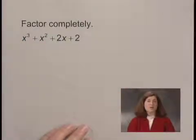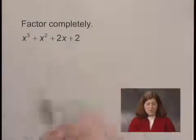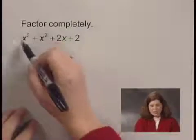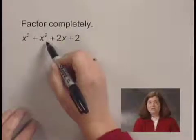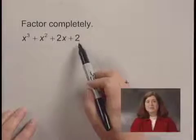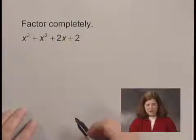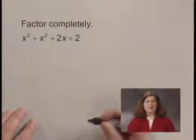Then we look at the number of terms. Here there are four terms. If there are four terms, we need to try factoring by grouping. I'm going to group the first two terms and factor out a common factor, and the third and fourth term and factor out a common factor, and see when I'm done if I have a common binomial factor.